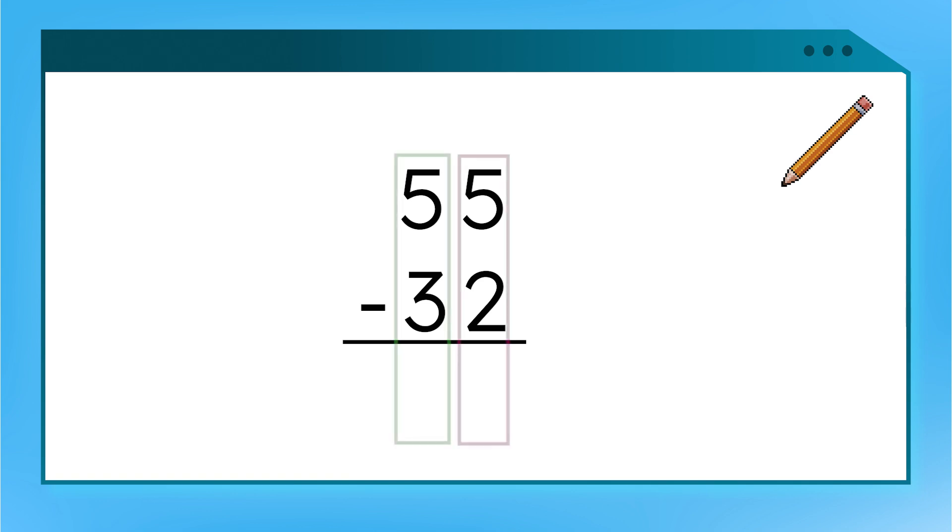Let's practice this with subtraction. Just like addition, we will line up our tens and ones. Then, we will subtract each place. What do you get when you subtract the ones? Good work! 5 minus 2 equals 3. We write that underneath the ones place.